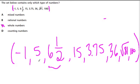They're not all mixed numbers because, for example, 15 is written just as a whole number. They're not all counting numbers because negative 1 is not included as a counting number, but they are all rational numbers.